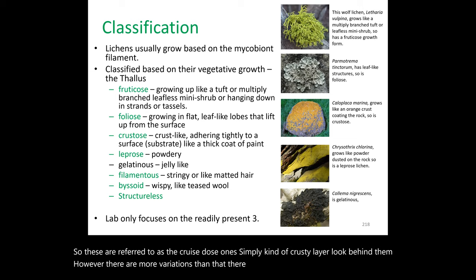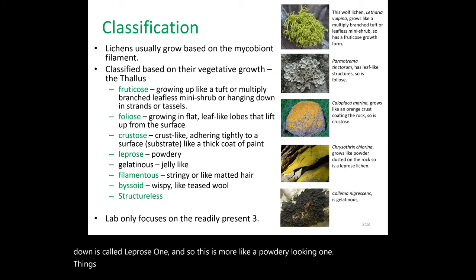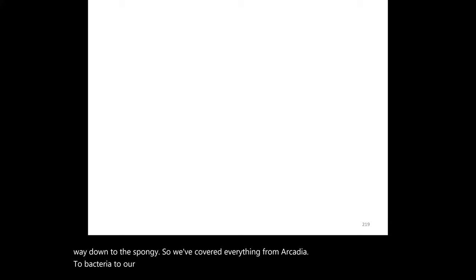In lab, we'll observe three lichen types: fruticose, foliose, and crustose versions. That covers all the material from topic F through fungi. We've now covered everything from archaea to bacteria, protists, large and small parasites — including both regular parasites and ectoparasites — and mushrooms including lichens. This completes the entire classification section.